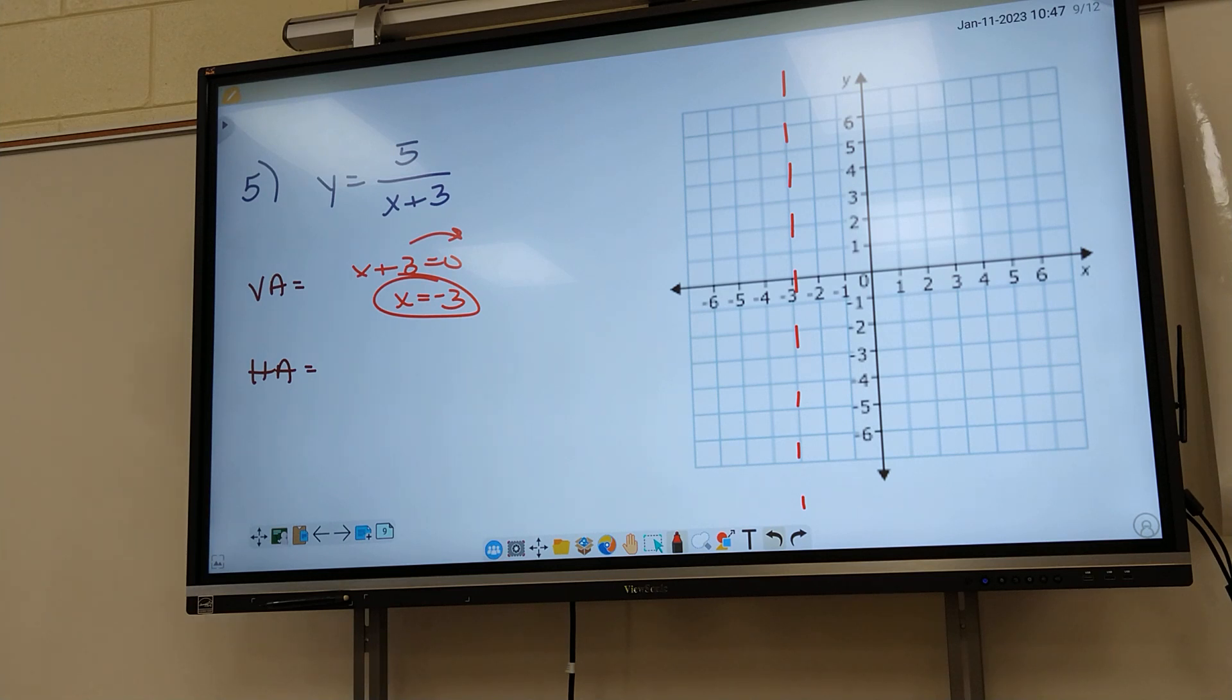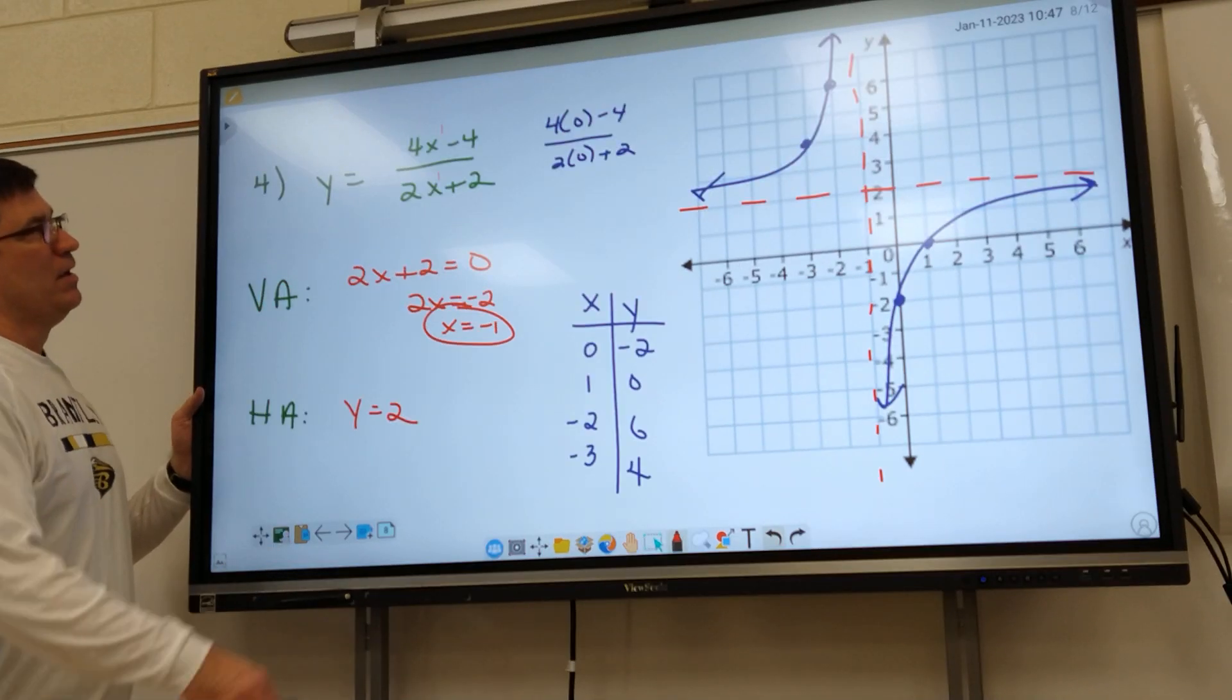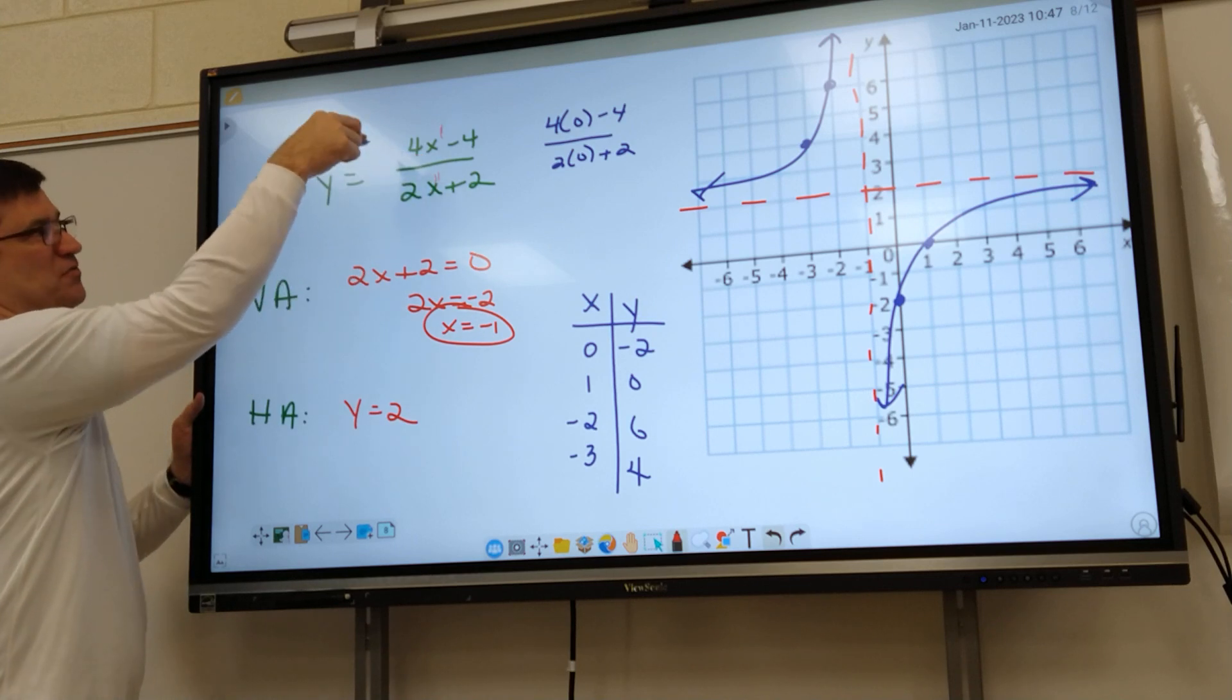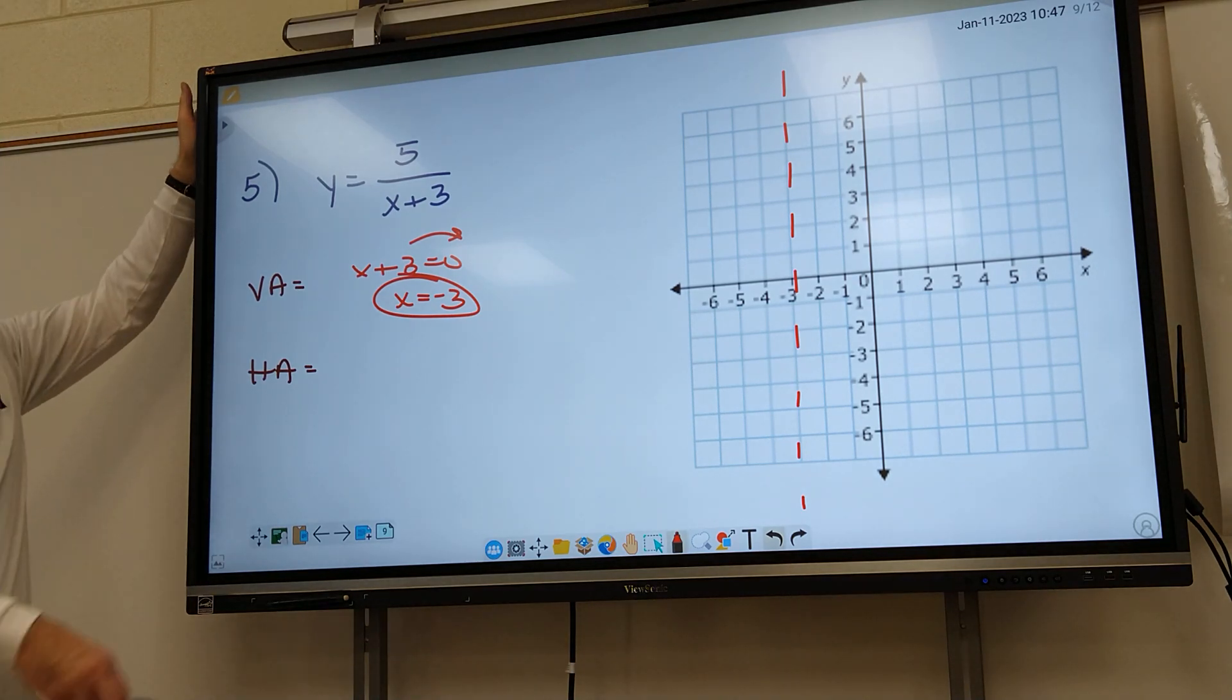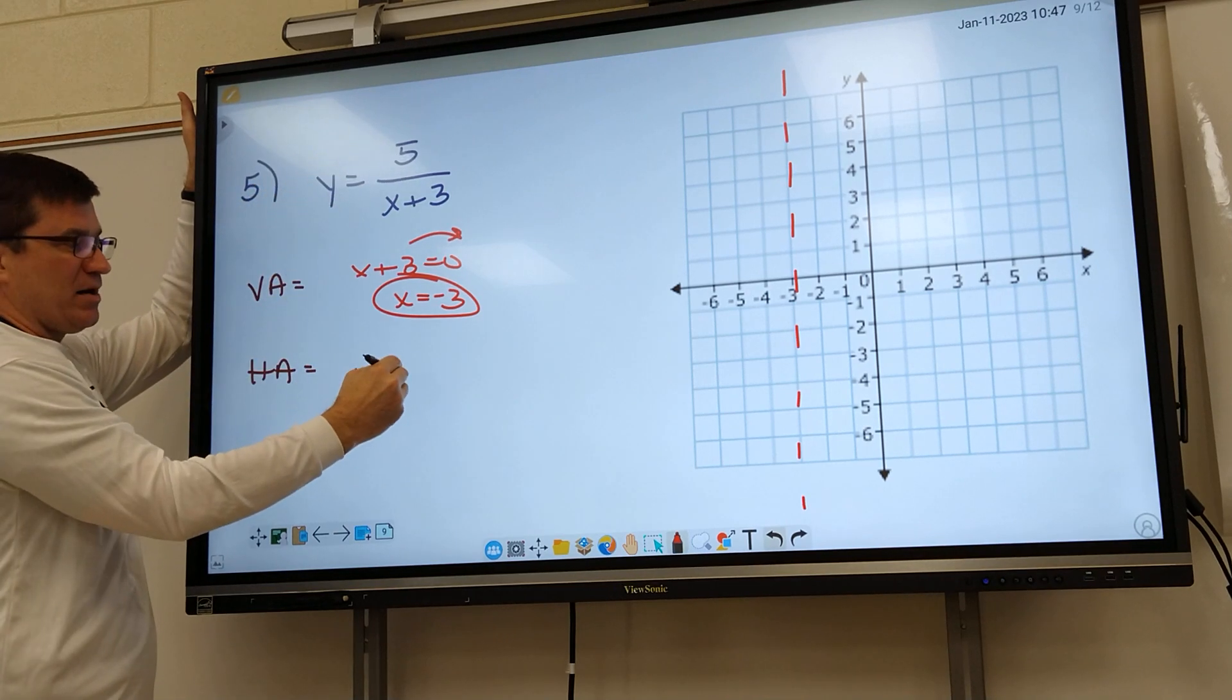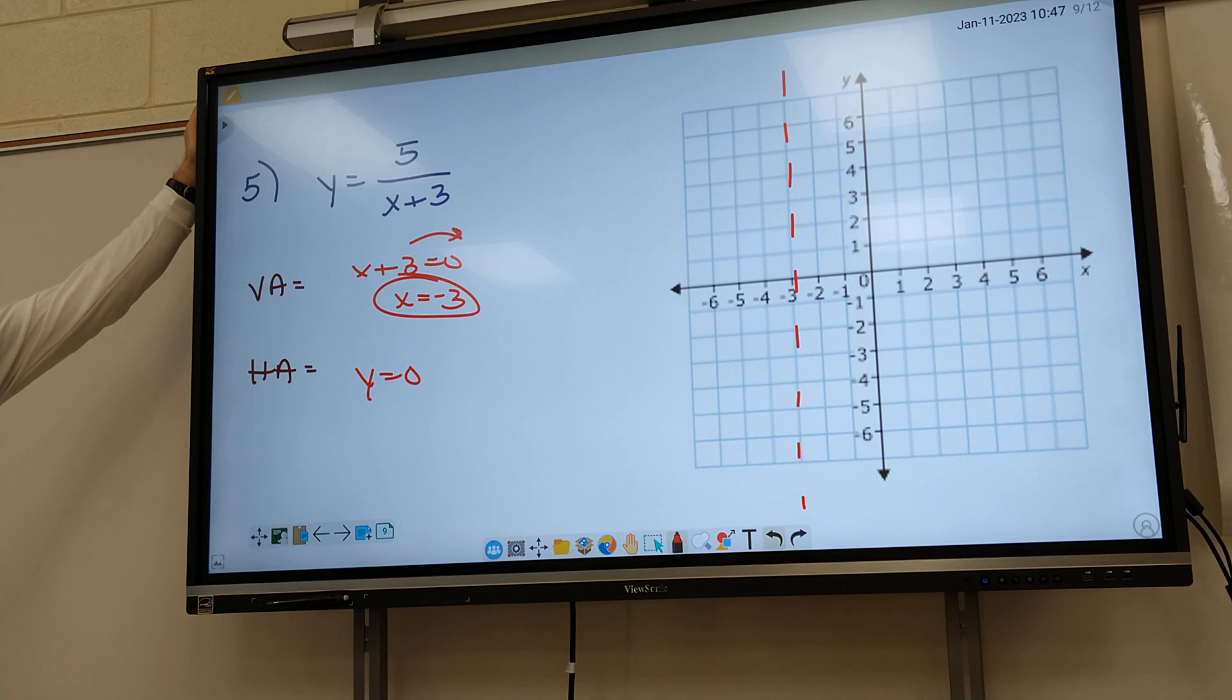This one's different, though. Look at it closely. Go back. Let's look at number four. My x has had the same exponent, so I divided the coefficients. Four divided by two gave me two. What's the problem on number five? It don't have an x on top, does it? So it's different. When it doesn't have an x on top, you just automatically put y equals zero. Don't worry about it. So if they both have an x on top and bottom, you divide the coefficients. If there's not an x on top, you just put y equals zero.